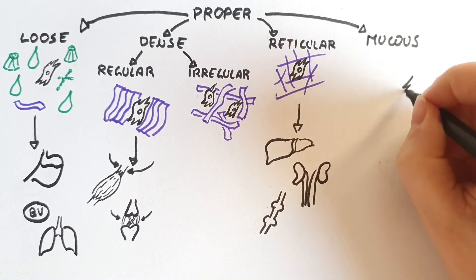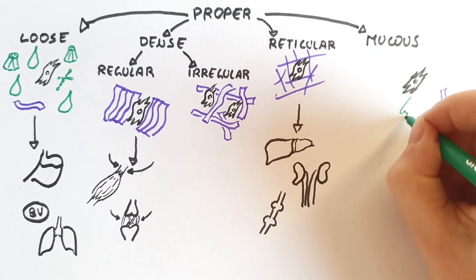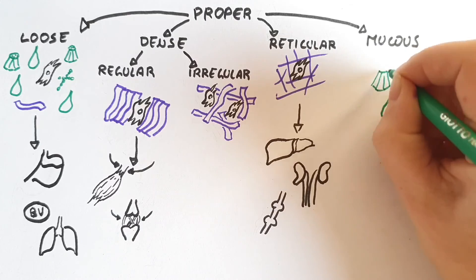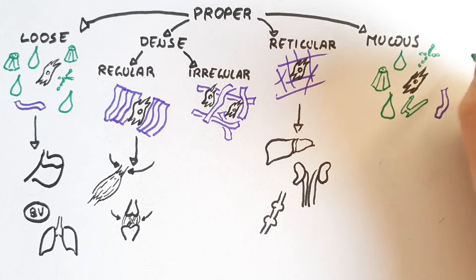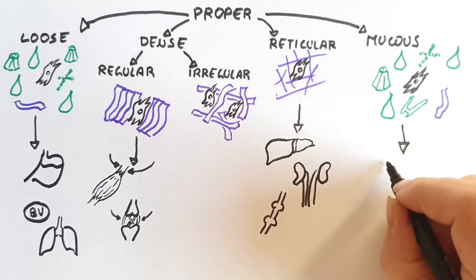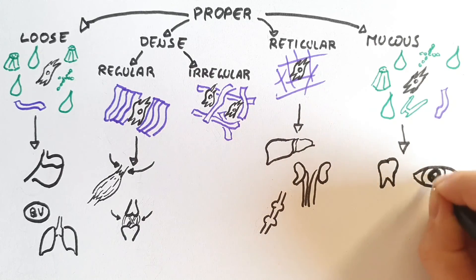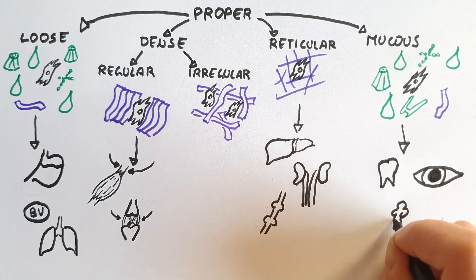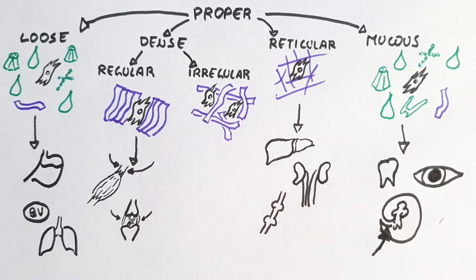Furthermore, there is the mucus connective tissue, which is a very loose connective tissue. It mainly contains ground substance and has a gelatinous consistency. It is located in the dental pulp, in the aqueous humor of the eye, and in the umbilical cord.